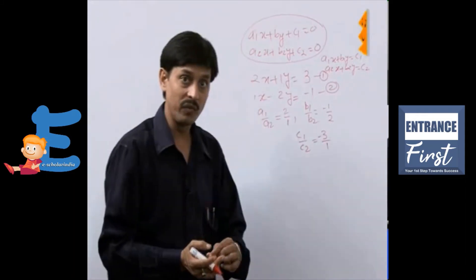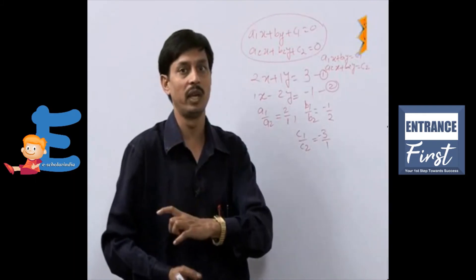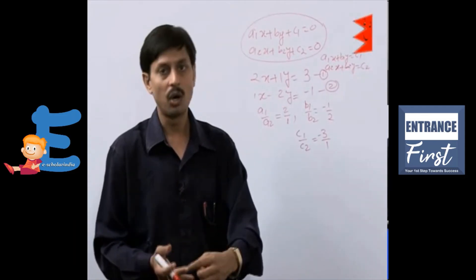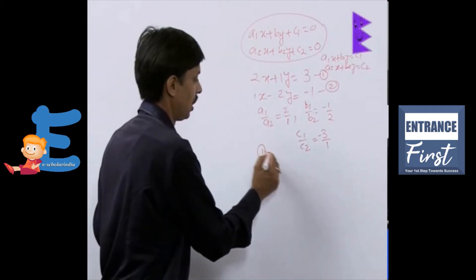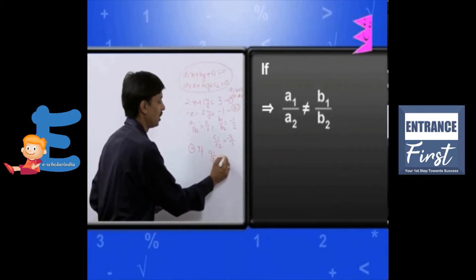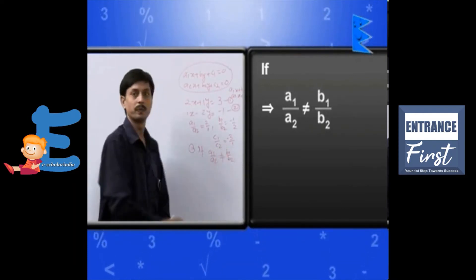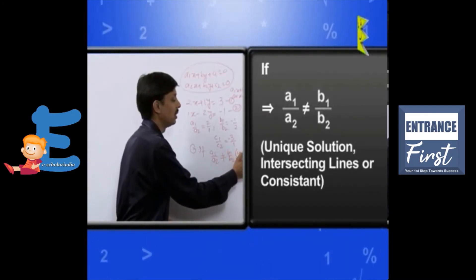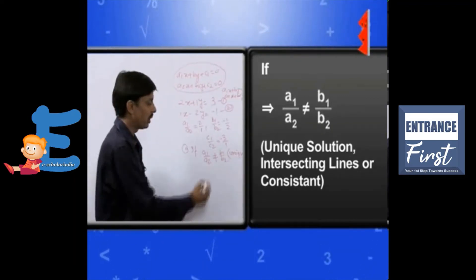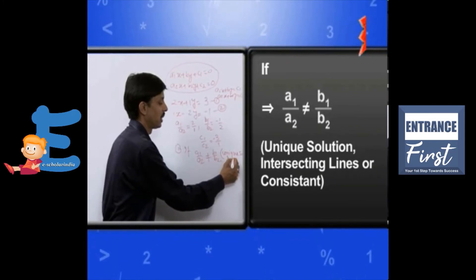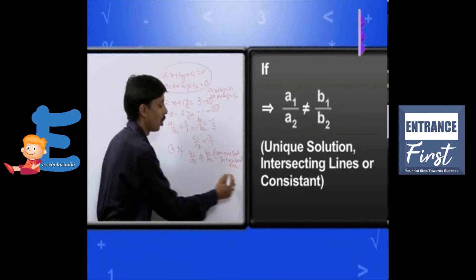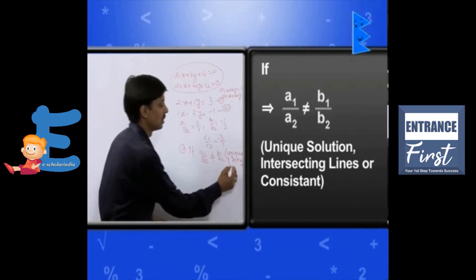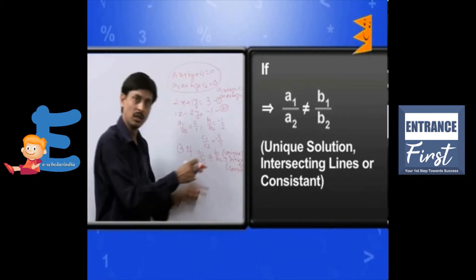So, first of all, when we are not plotting the graph, we are actually not solving. What is the method of testing or checking that unique solution, infinite solution or no solution? Condition number one: if a1 upon a2 is not equal to b1 upon b2, this is known as the condition of unique solution or intersecting lines or it can be called as consistent with unique solution.